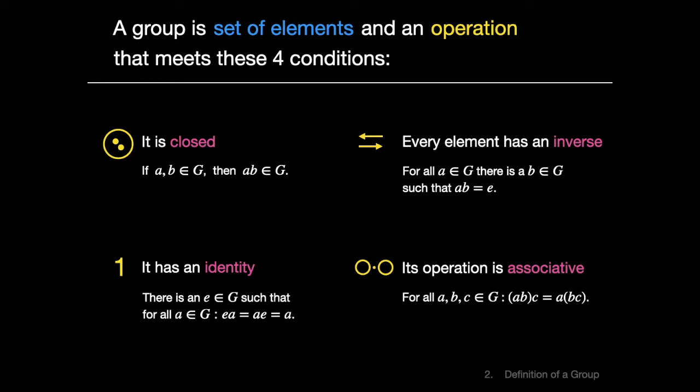To summarize, here's what it takes to be a group. A group is a set of elements and an operation. The set of elements is closed under the operation, so the product of any two elements in the set is also an element in the set.